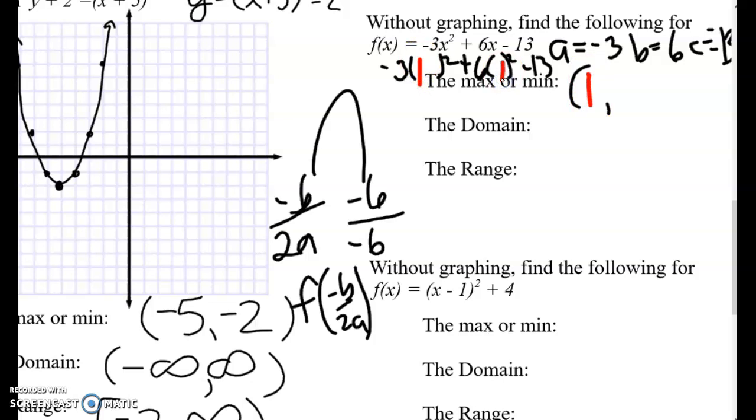So negative 3 times 1 squared. You have to do the 1 squared first, times negative 3. So that's negative 3 plus 6 times 1 squared is 6. So negative 3 plus 6, positive 3, minus 13 is 10. So there we go. That's my max or min. And then I think about, is that really 10? No, it's negative 10. Then we decided it was facing down. So that is my maximum.